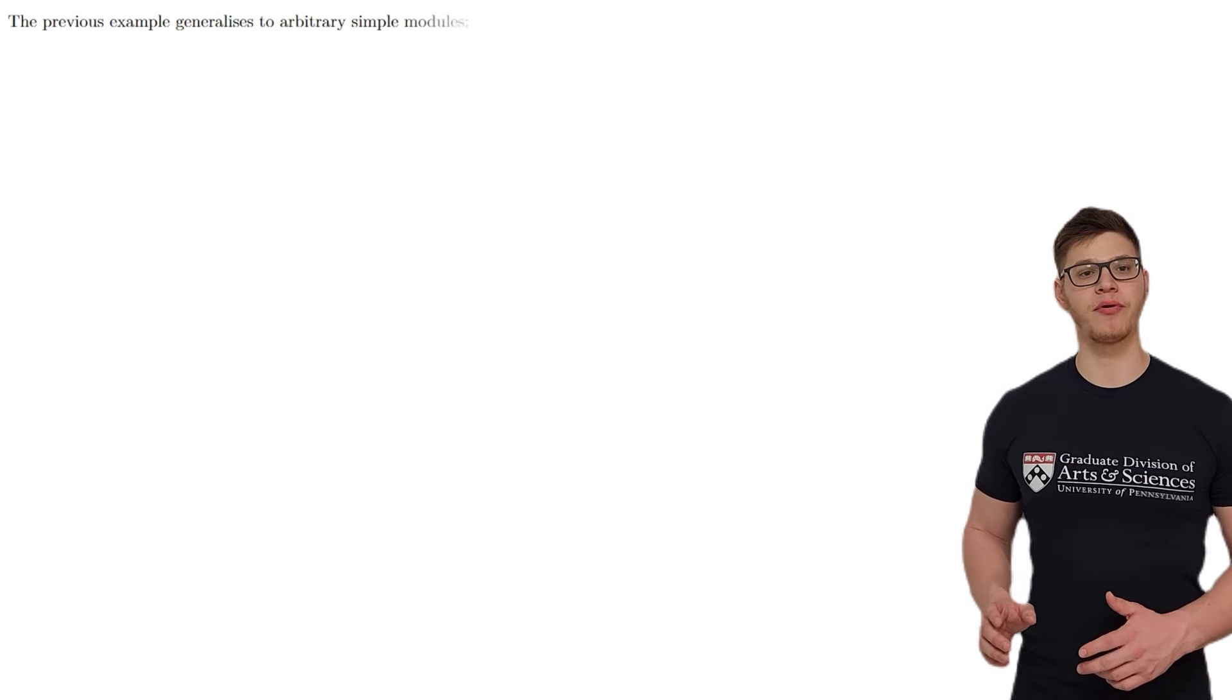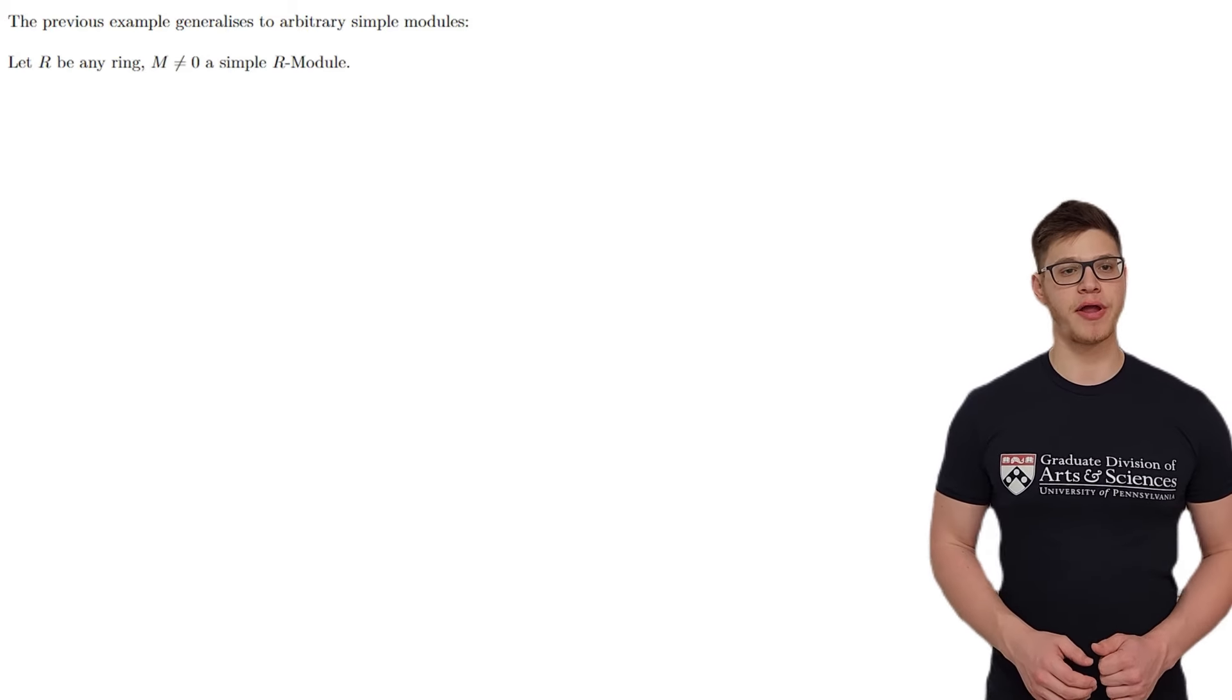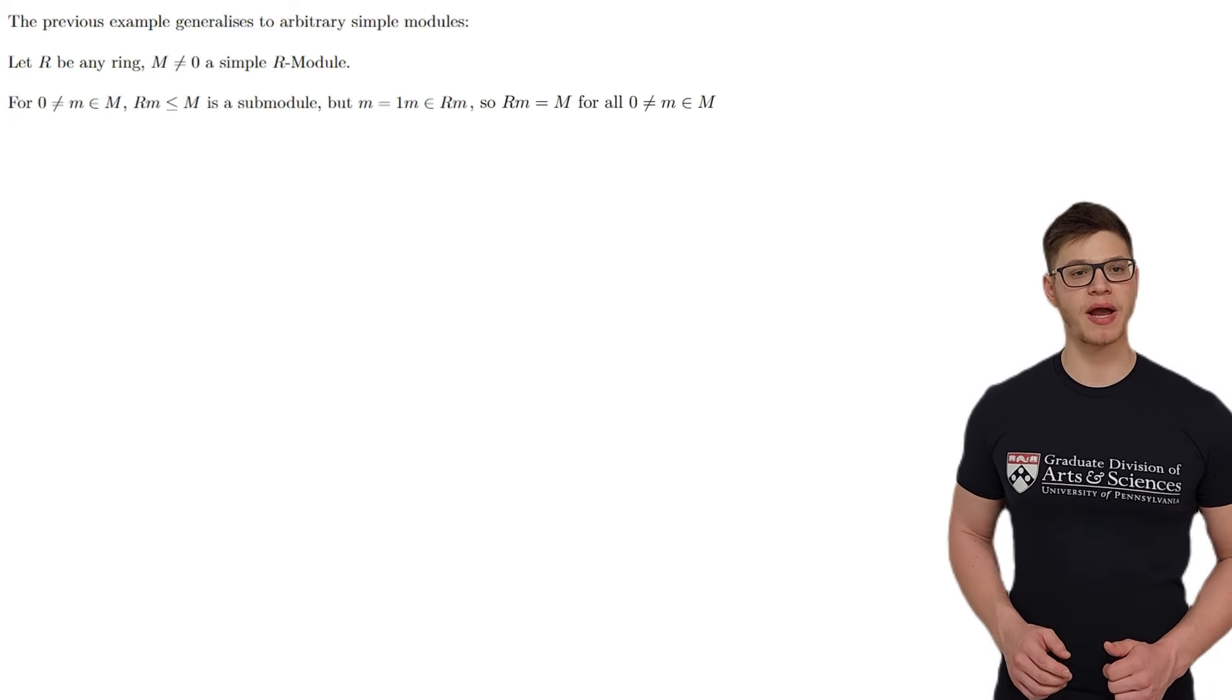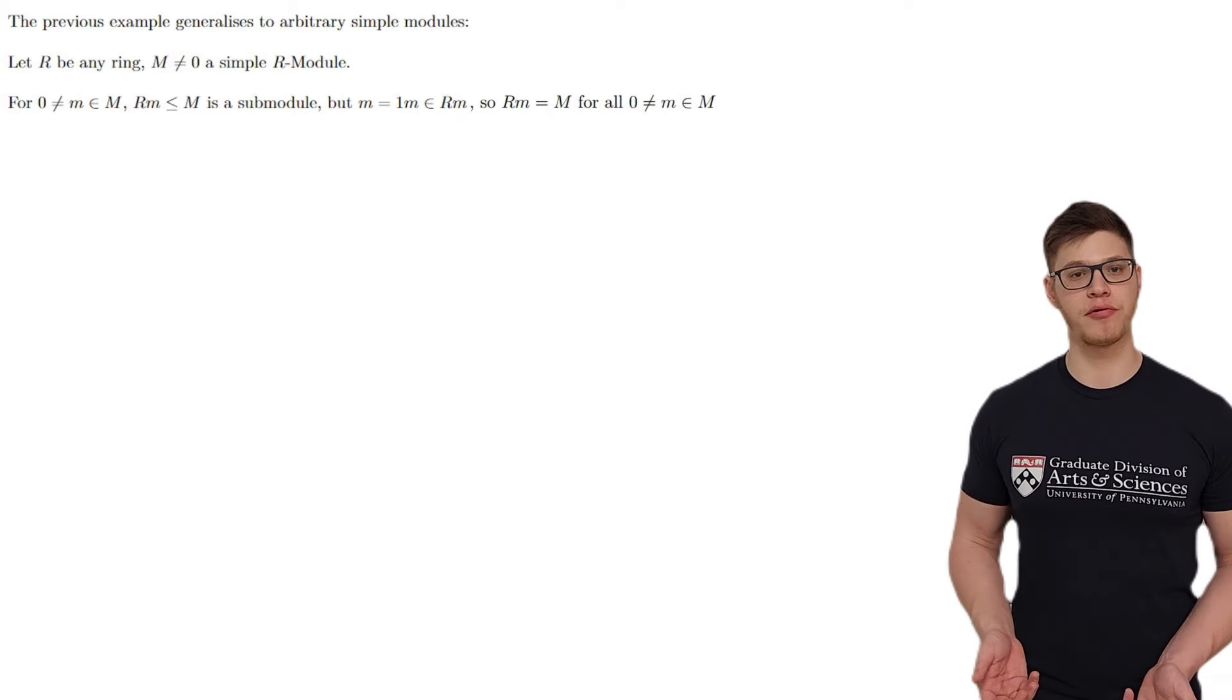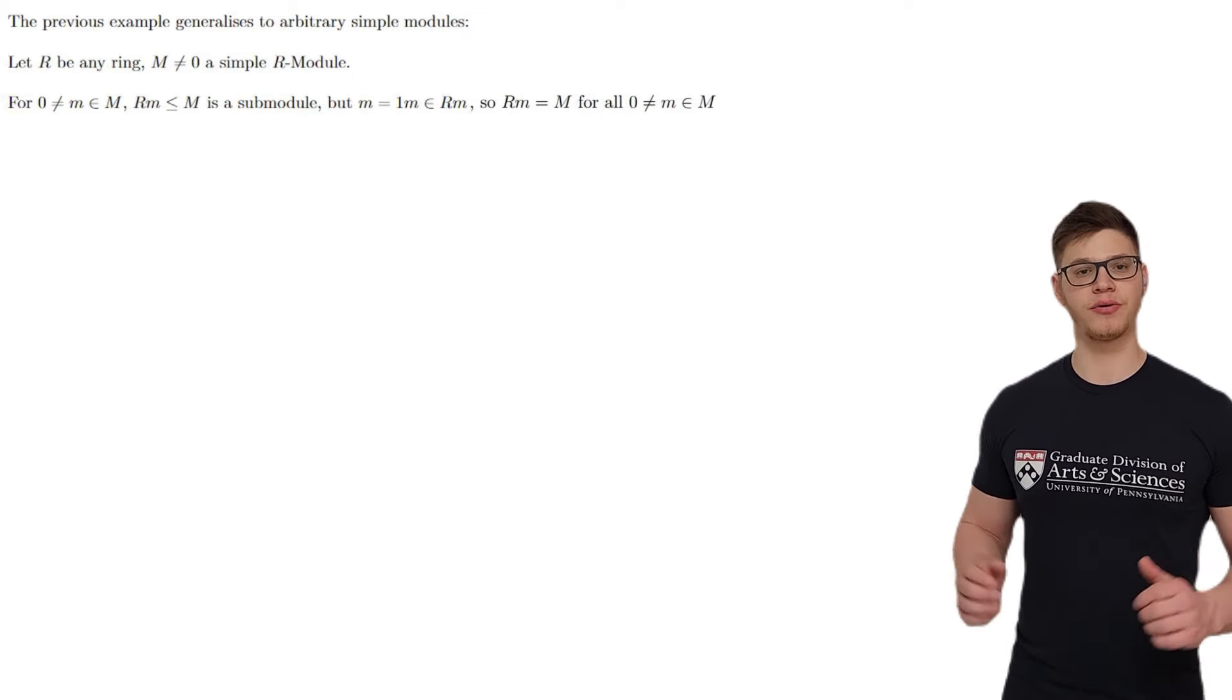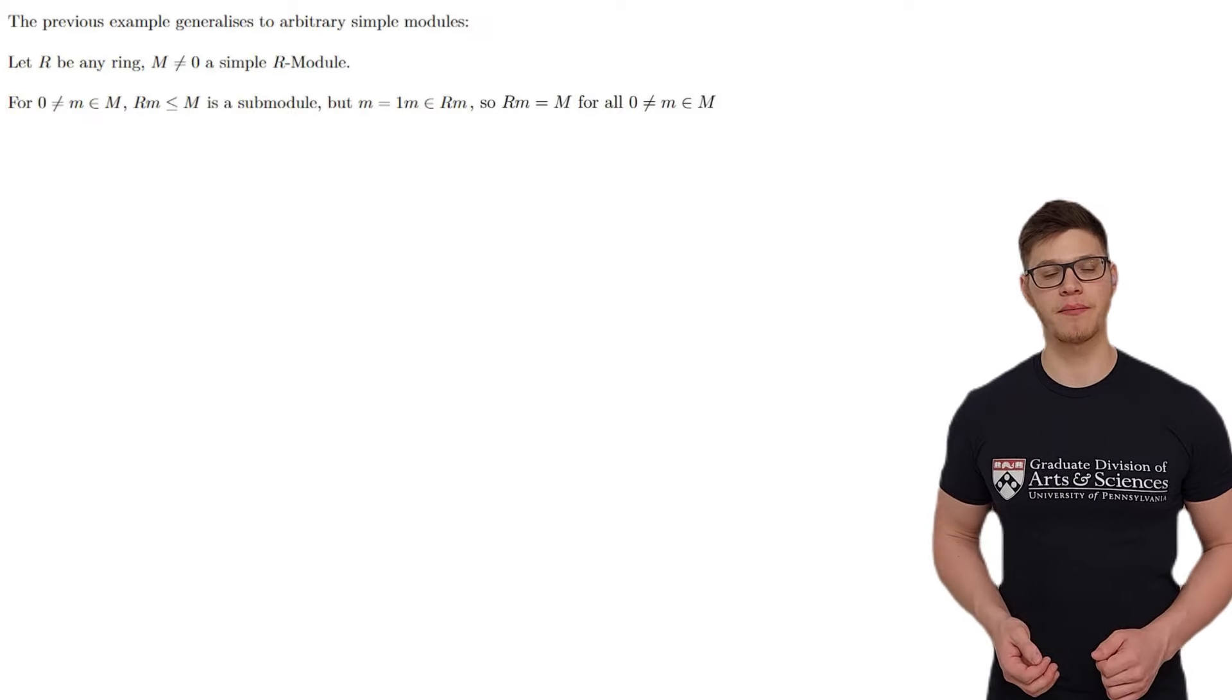The previous example actually generalizes to arbitrary simple modules in the following way. If M is a simple module over the ring R, then for any non-zero element m, the sub-module generated by m is non-zero, because it contains m, which itself is non-zero. So, by simplicity, the sub-module generated by m is equal to the entire module, i.e., M is cyclic, and every non-zero element is a generator, just like in our previous example.